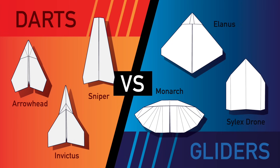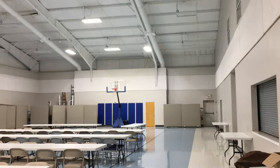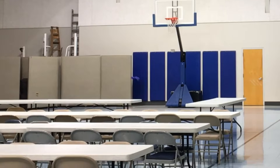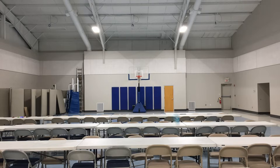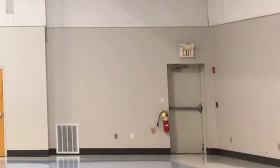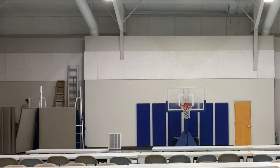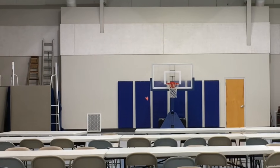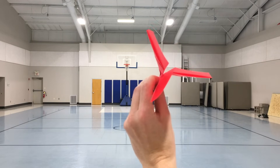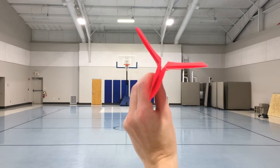Gliders tend to have wide wings and fly at slow speeds. If you launch them gently, they'll glide across your room. But if you throw them too hard, they'll crash because their weaker wings can't withstand high speeds without deforming. Darts, on the other hand, are meant for those blistering speeds, but improper technique can still cause them to crash as well. If you tilt a plane to the left or to the right as you launch it, it will likely turn in that direction.